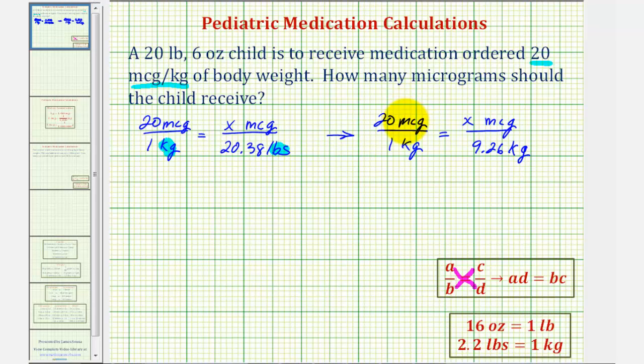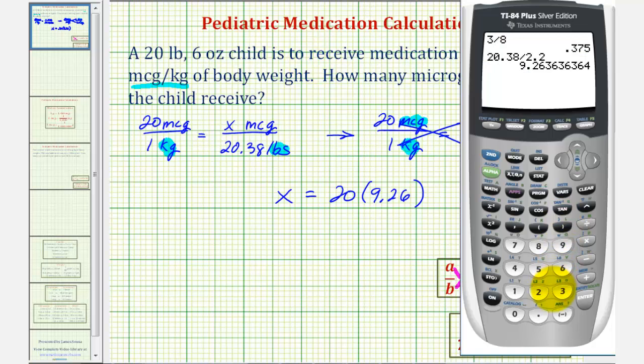Because we have the same units on top and on the bottom, we can now cross multiply and solve for x. One times x must equal twenty times nine point two six. Well one times x is just x and twenty times nine point two six will give us the number of micrograms needed for this child. One hundred eighty five point two micrograms.